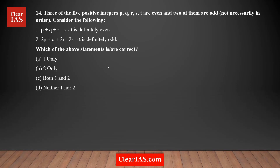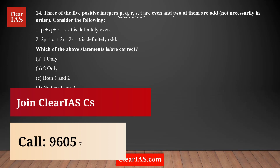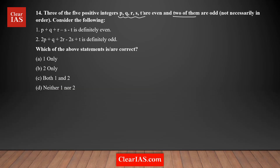Three of the five positive integers P, Q, R, S, T are even and two of them are odd, not necessarily in that order. Out of these five integers, three of them are even and two of them are odd, but we don't know which one is odd and which one is even.